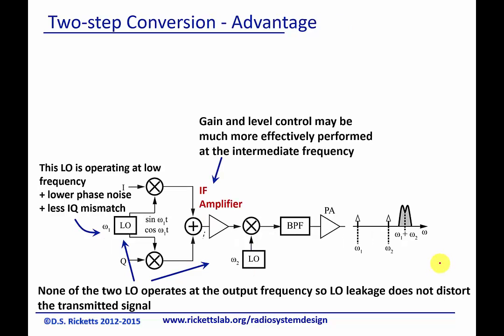It's just upconverting that single signal. Another thing is that gain and level control was hard to do at higher frequencies, but with a two-stage conversion, we can basically do all of that at the intermediate frequency. So with two-stage conversion, not only are we getting rid of the feedthrough problems, we're also able to do all of this low-frequency circuitry in a much easier way. This upconversion to omega-1 and the amplification at omega-1 is at much lower frequencies, so it's easier to implement in either discrete or integrated circuits.